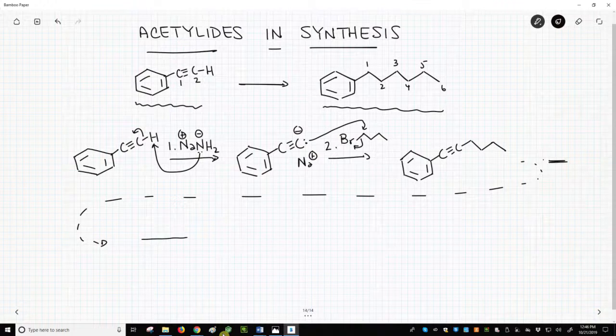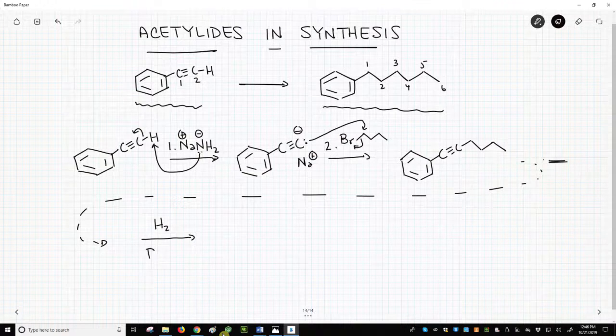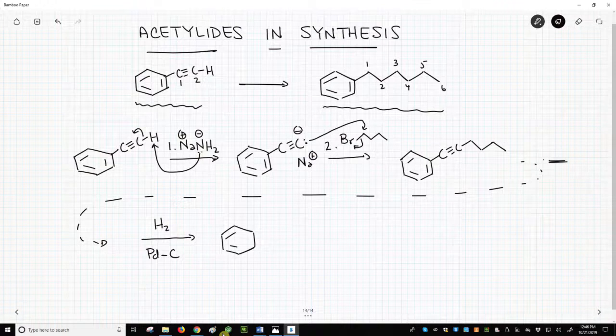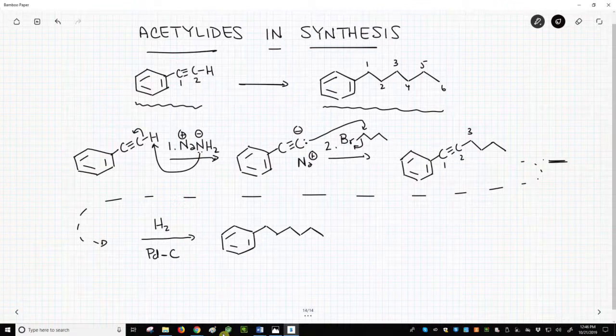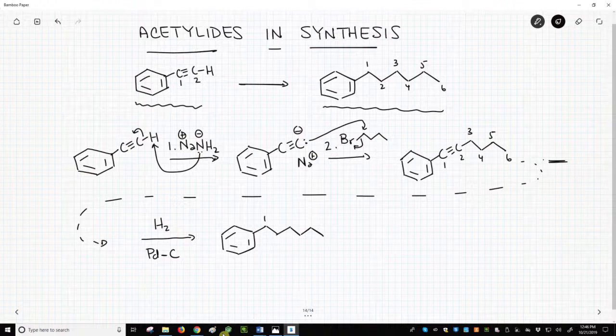So our reagents for this last step will be hydrogen and palladium to reduce our alkyne to the alkane. We don't need a fancy catalyst for this. And we will get our six carbon chain off the end, our alkane. Note that we started with six with the alkyne, and now we finish with six in our alkane.